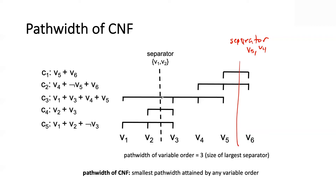Here's where there's a difference between the cut set and the separator: the cut set had three clauses, but the separator has only two variables. The path width of a variable order is the size of the largest separator. In this case it happens to be 3. The path width of the CNF is the smallest path width attained by any variable order. It happens that path width and cut width of a CNF neither dominate the other.